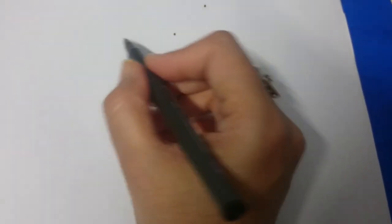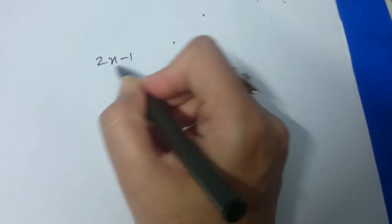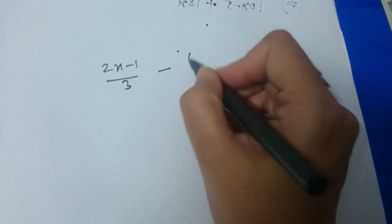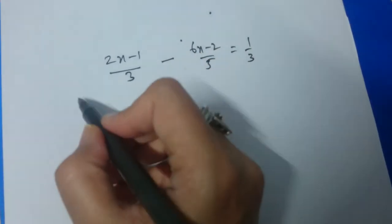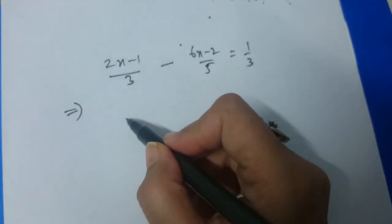Let us solve a linear equation in one variable: 2x minus 1 over 3 minus 6x minus 2 over 5 equal to 1 by 3. What will be the first step?